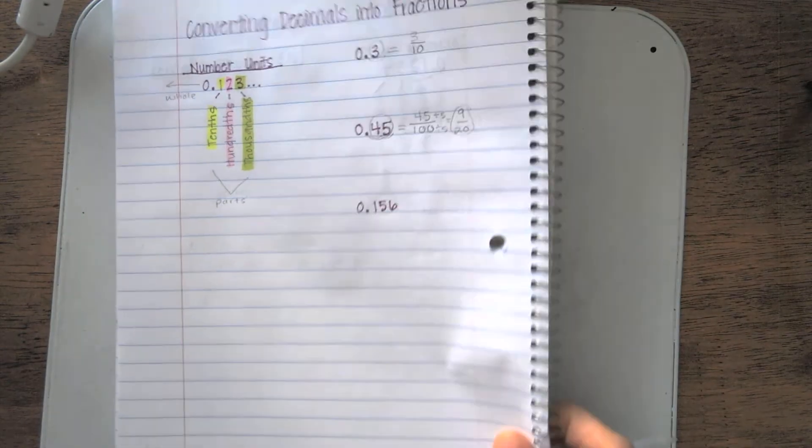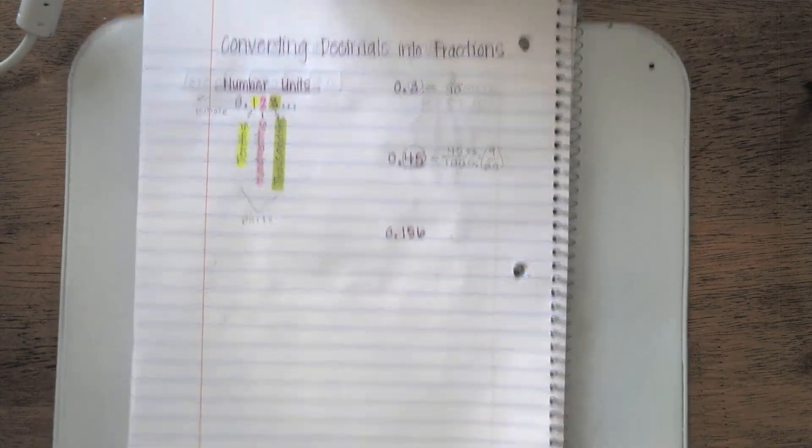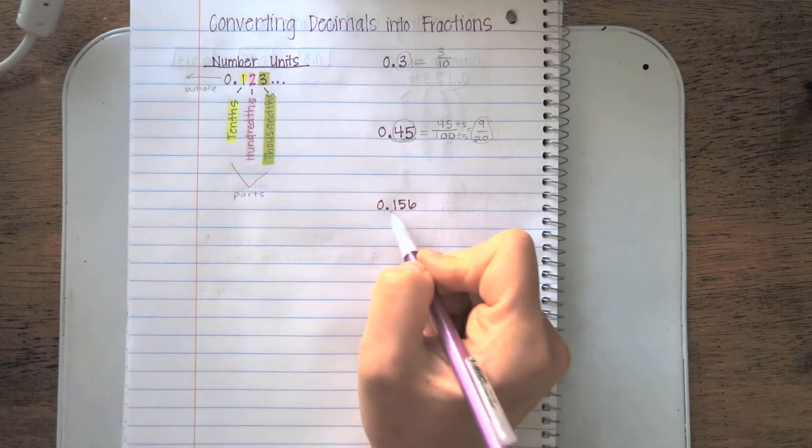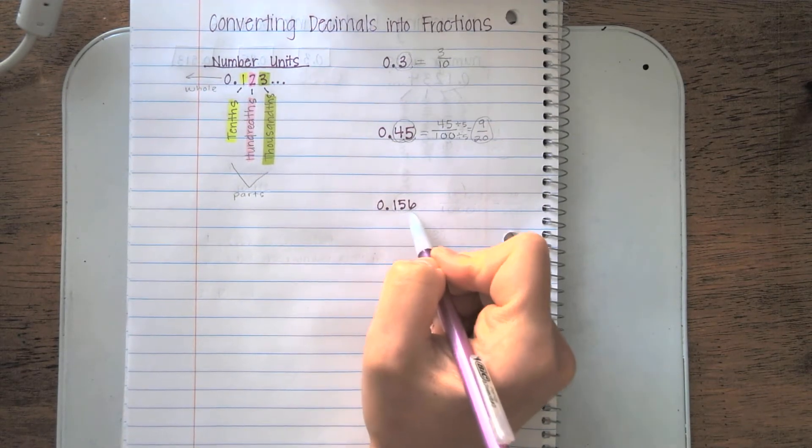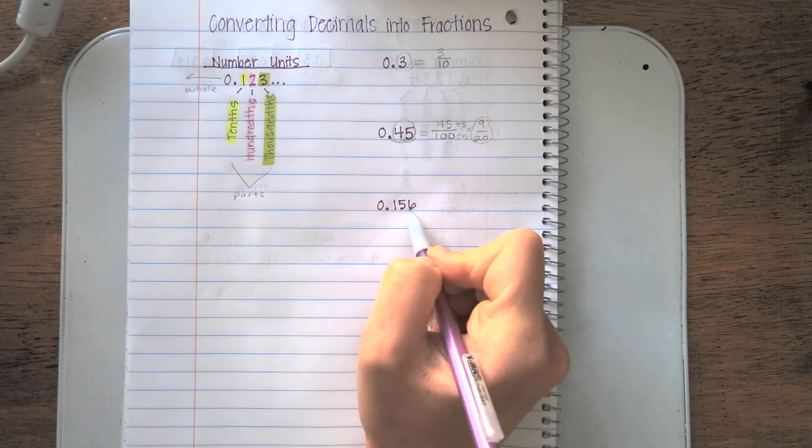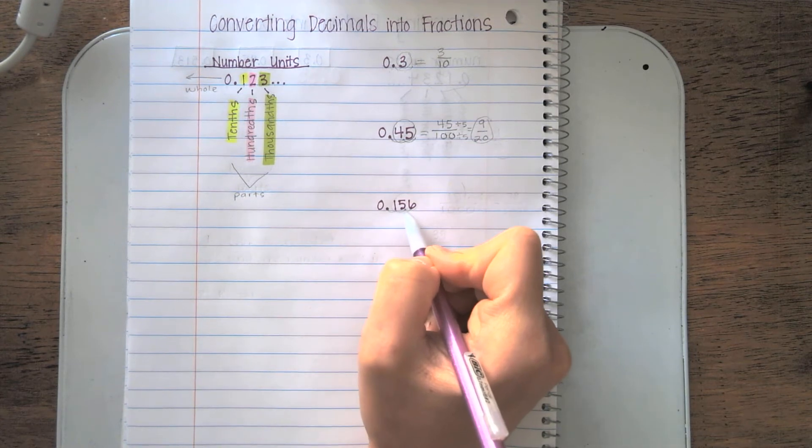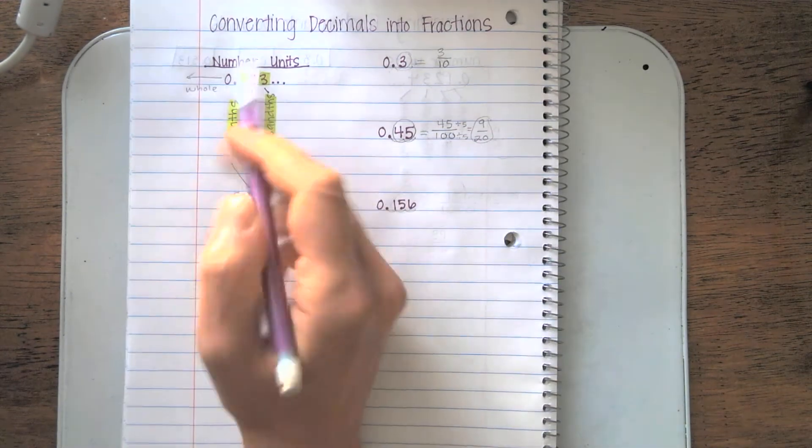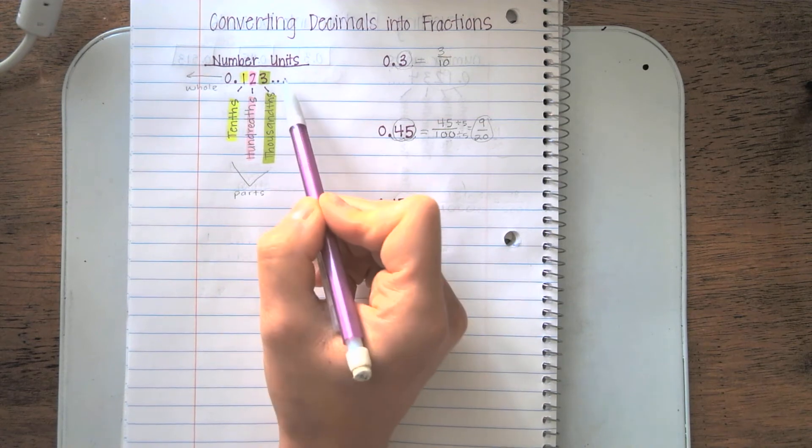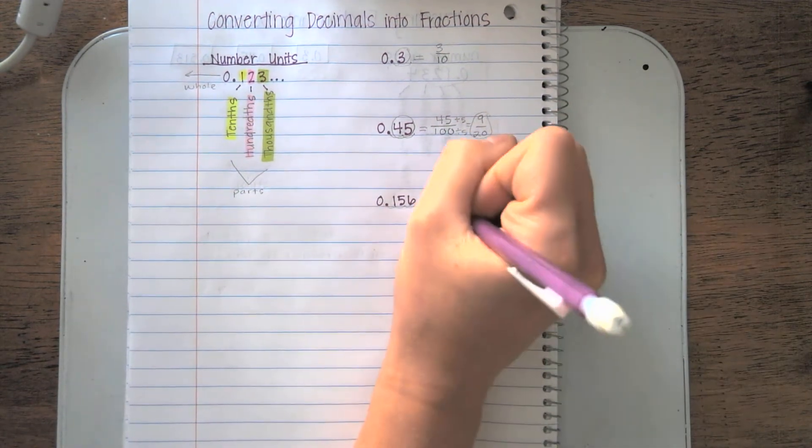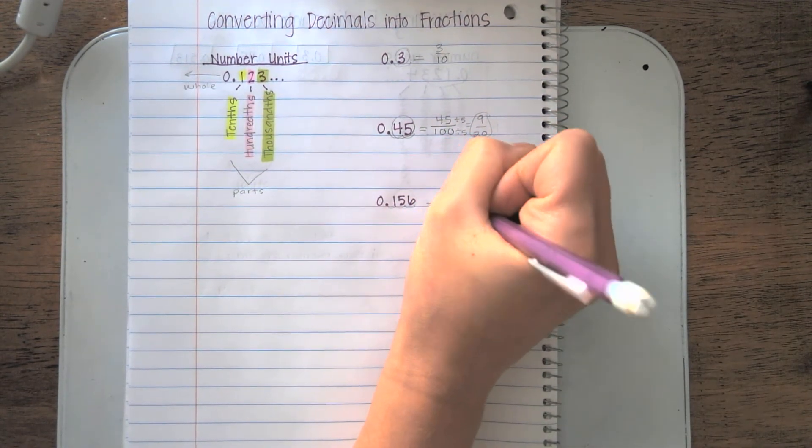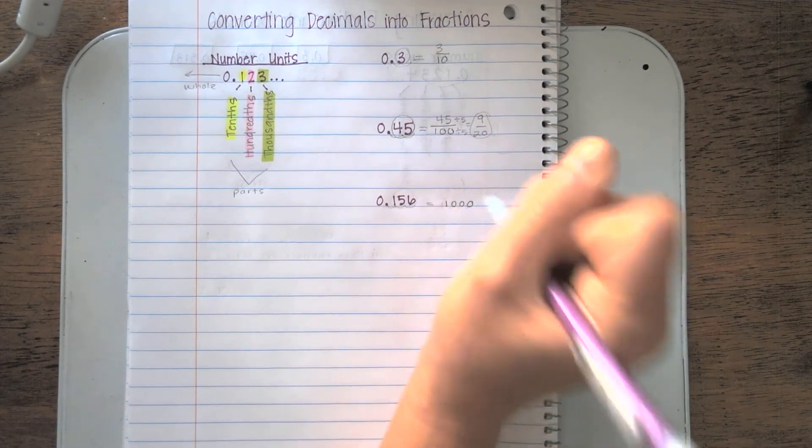Alright, let's go on to this last problem. I see I have 0.156. That goes one, two, three units to the right. So I know that for my fraction, I'm going to put 1,000 on the bottom.